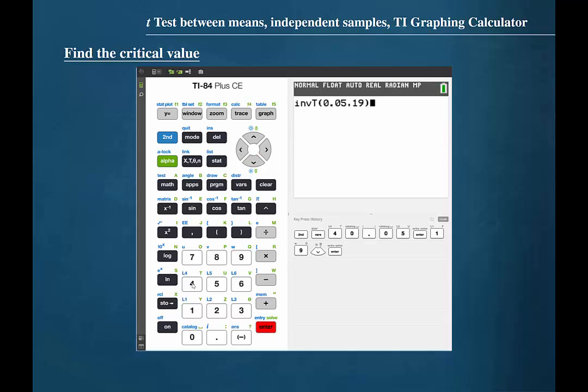If you are using a TI graphing calculator that does not prompt for the values, then you will need to place the values in the correct order. The correct order is area, comma, and then the number of degrees of freedom. Press enter, and the calculator gives us the left-tailed critical value of negative 1.729.